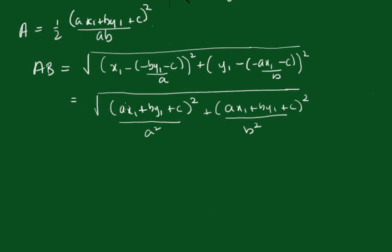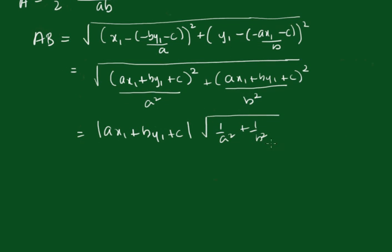Now, we can take this out as a common factor, and that will be, in a square root, we know that's the absolute value, so ax1 plus by1 plus c, outside the square root of, this will be 1 on a squared plus 1 on b squared. Now, that becomes square root of a squared plus b squared on ab.